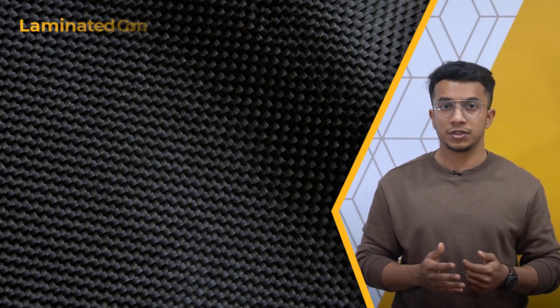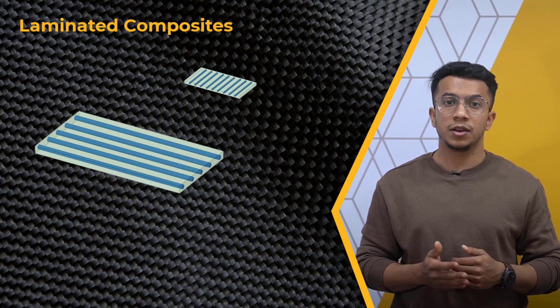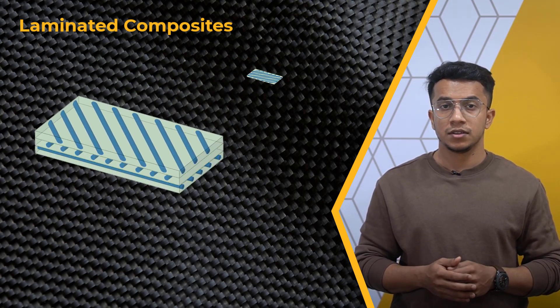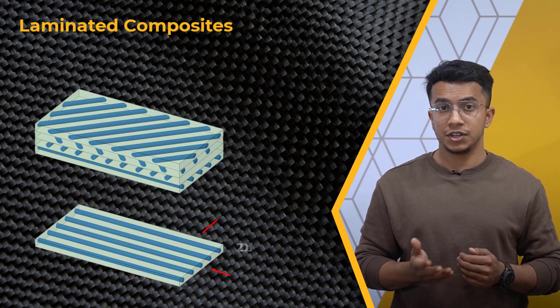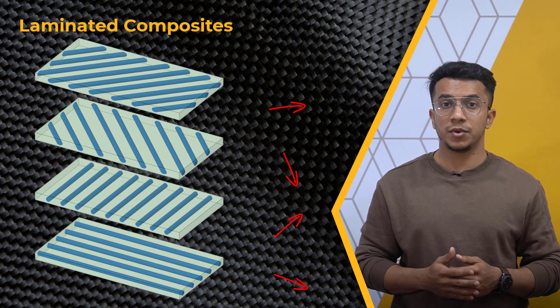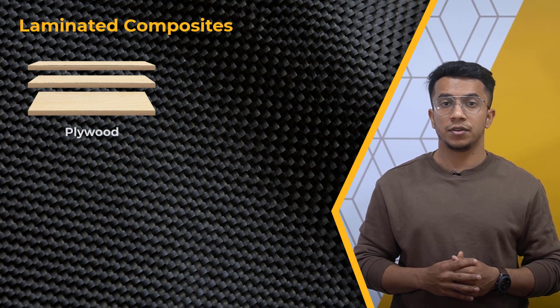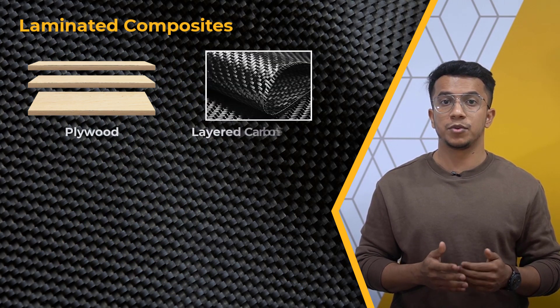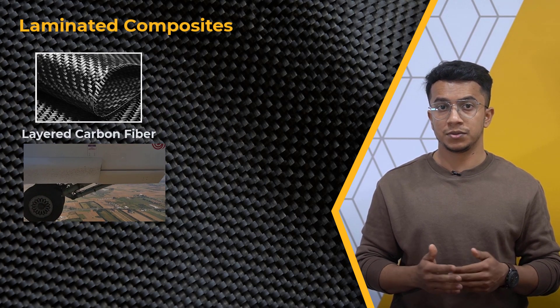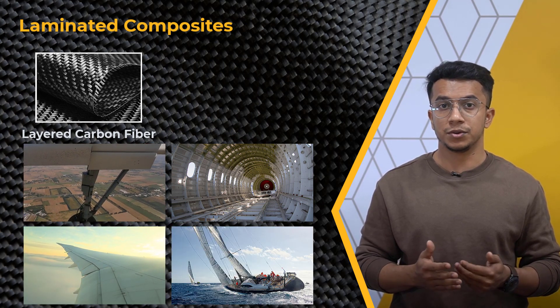Now that we have identified the various types of composites, let's look at the most common forms in which they can be found. Laminated composites and sandwich composites are the most common types of layered composites. The laminate composite is made up of stacks of 2D laminas — a lamina is a composite material in sheet form, also known as a layer or ply. The orientation of the laminas is determined by the application and desired mechanical properties. Plywood is a common example, as is layered carbon fiber, which is used to make landing gear doors, leading and trailing edge panels of wings, and high-performance sporting goods.